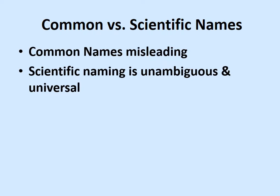Common names arose for that species out west, and using those names can be misleading because it could refer to two completely different things — like Tamarack, which is a deciduous conifer, versus Lodgepole Pine, which is a totally different group of conifers.